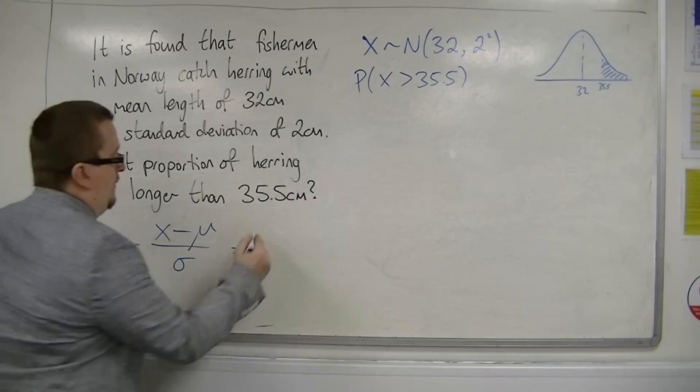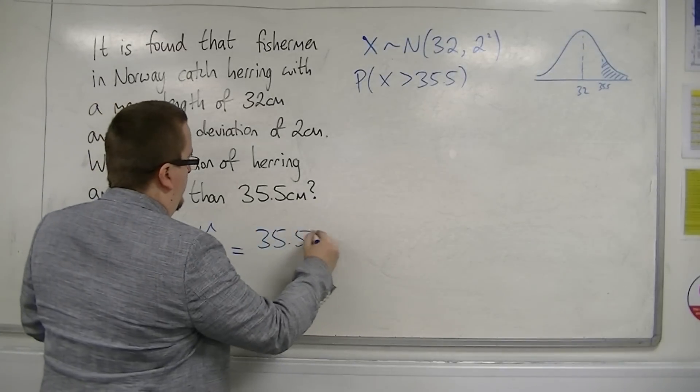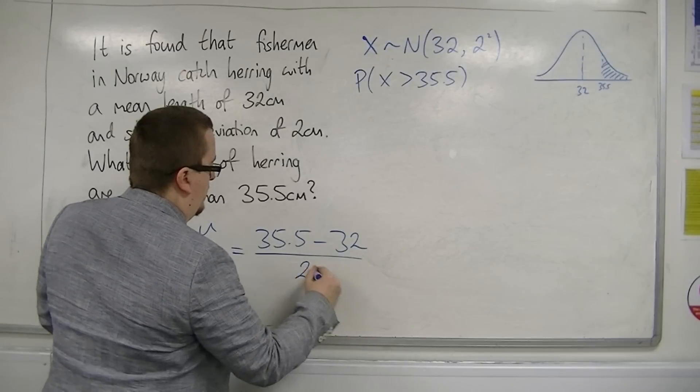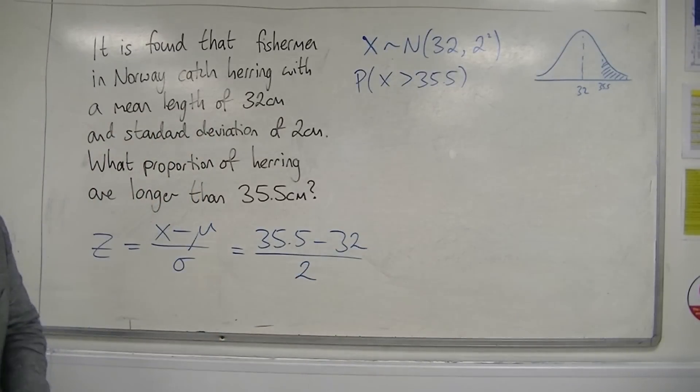which in this case is 35.5, take away the mean of 32, and divide that by the standard deviation of 2.